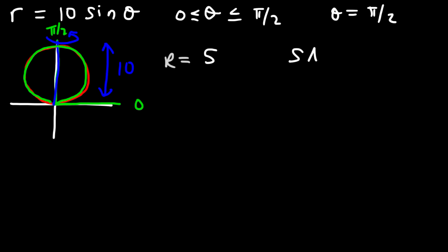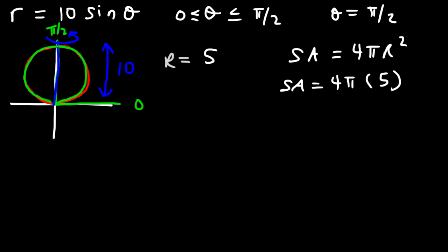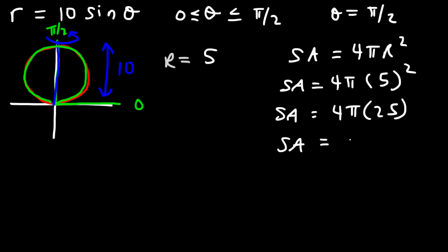The surface area of the sphere is 4 pi r squared. So this is going to be 4 pi times 5 squared, and 5 squared is 25. 4 times 25 is 100, so the surface area of this object is going to be 100 pi square units.